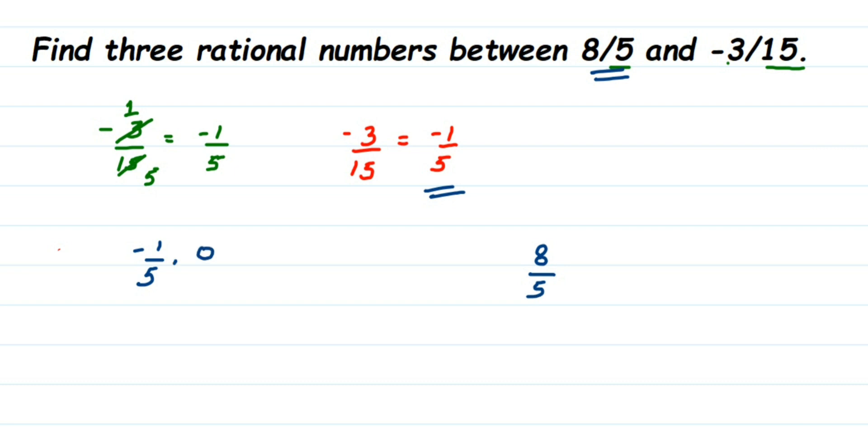We can start from 0/5 because after -1 we'll get 0 in the number line, then 1/5, then 2/5, and so on up to 7/5. In between these numbers, I can just pick three numbers—three rational numbers—because the question is asking for three rational numbers.